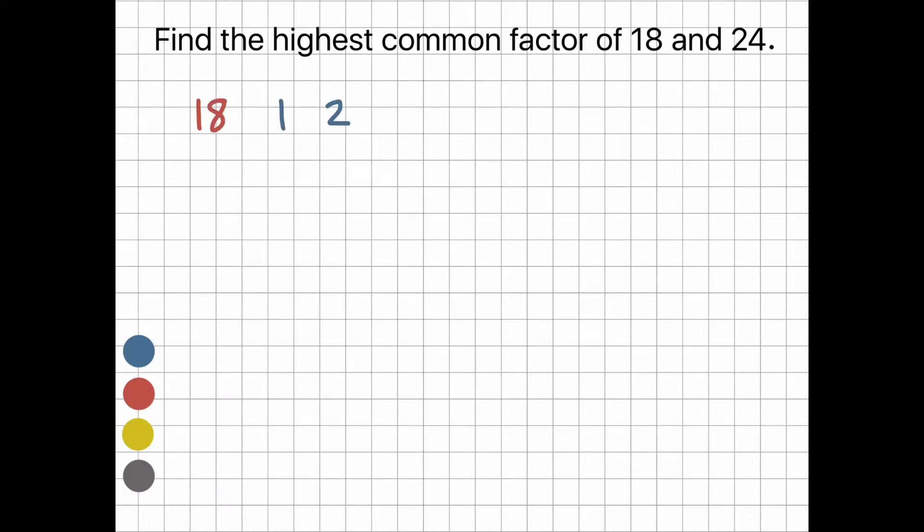For 18, we have 1, 2, 3, 6, 9, 18. For 24, there's 1, 2, 3, 4, 6, 8, 12, 24. We then find the highest number in both lists, which is 6. The highest common factor is 6.